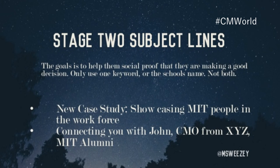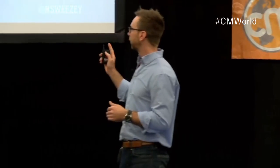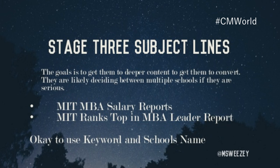Stage two subject lines are for people seeking social proof — they may know the marketplace but aren't fully decided. Use either your brand or your keyword, but not both. Give them ammunition to make a decision. In B2B, an average of seven people are making a decision, so help your champion convince others. Stage three is when they're selecting vendors — it's okay to use both your keyword and brand, because now they fear making a decision without all the information, and you're addressing that fear.